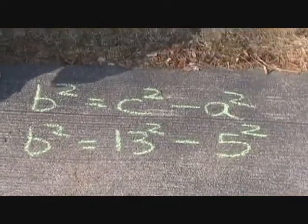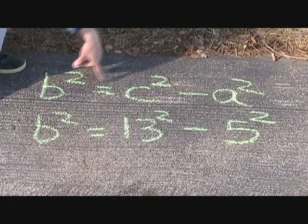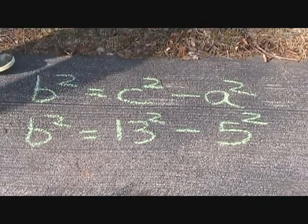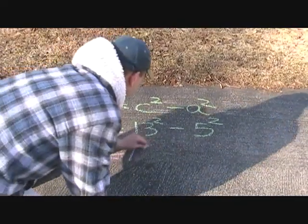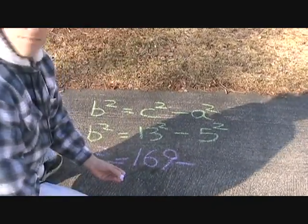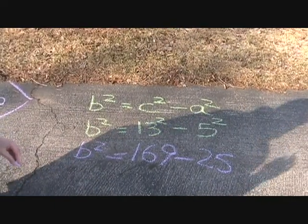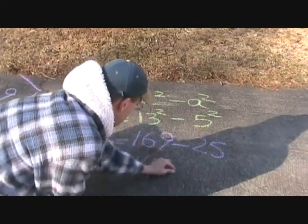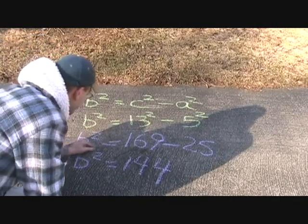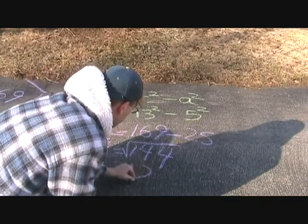Let's show this with algebra as well. In this case, we've subtracted A squared from both sides of the equation. B squared is now equal to C squared minus A squared. B squared equals 13 squared, 169, minus 5 squared, 25. B squared is equal to 144. Take the square root of both sides of this equation and we have B equals 12.